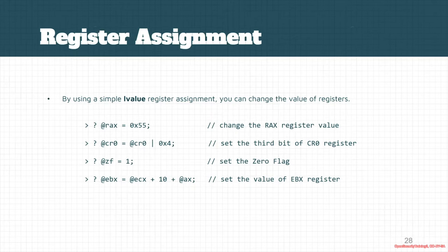Here's how we can change the value of each register. We use @rax = 0x55, which directly changes the RAX register value to a static value. Or if you want to change CR0 register value,